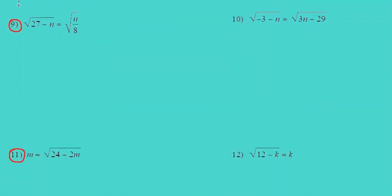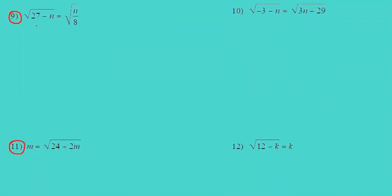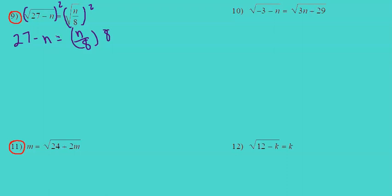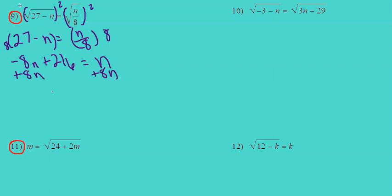Let's look at number 9. The square root of 27 minus n equals the square root of n over 8. Exponentiate each side by 2, so you have 27 minus n equals n over 8. Multiply each side by 8, giving negative 8n plus 216 equals n. Add 8n to each side: 216 equals 9n. Divide each side by 9, and n equals 24.